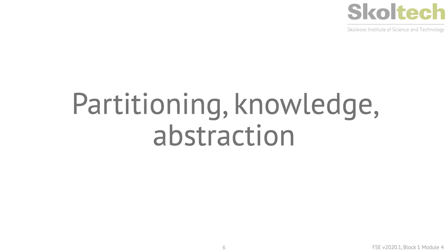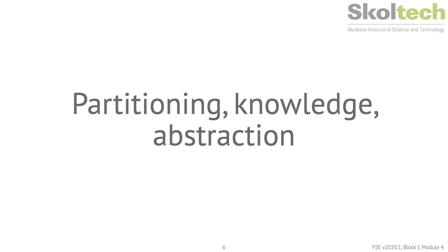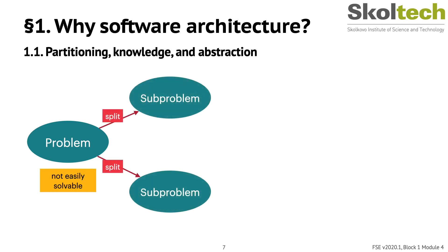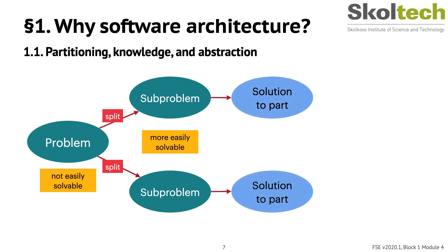Partitioning, knowledge, and abstraction are the three pivotal categories in software engineering when it comes to architecture. Developers partition a problem so that its parts are smaller and more tractable, they apply knowledge of similar problems, and they use abstractions to help them reason. These are effective because they enable our fixed-size minds to comprehend an ever-growing problem. Partitioning is effective as a strategy to combat complexity and scale when two conditions are true.